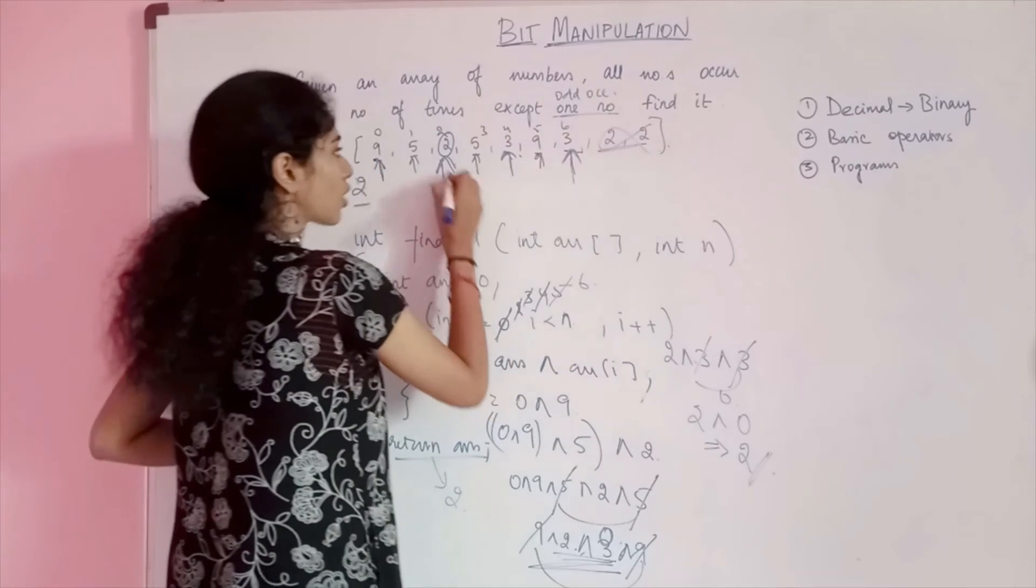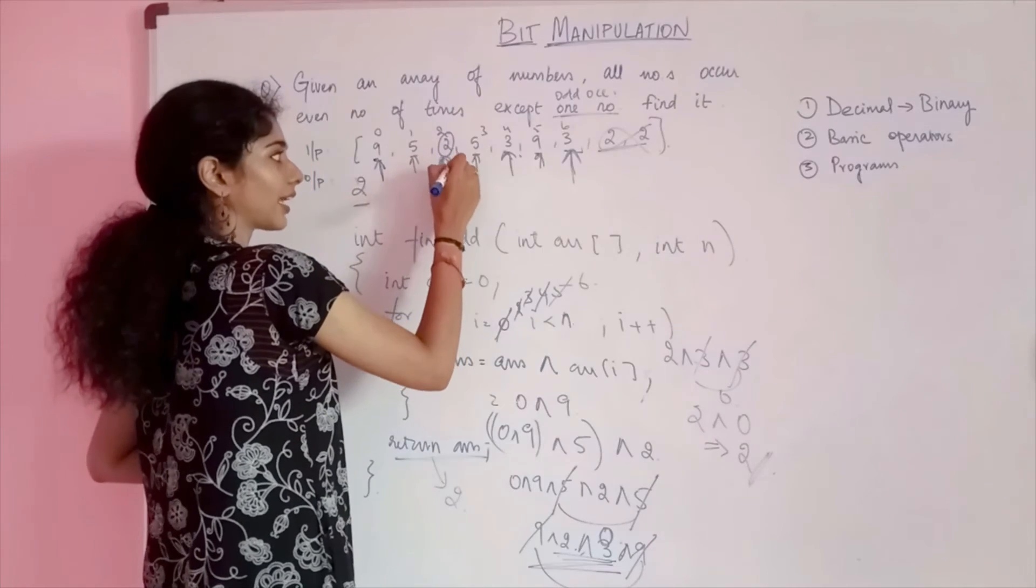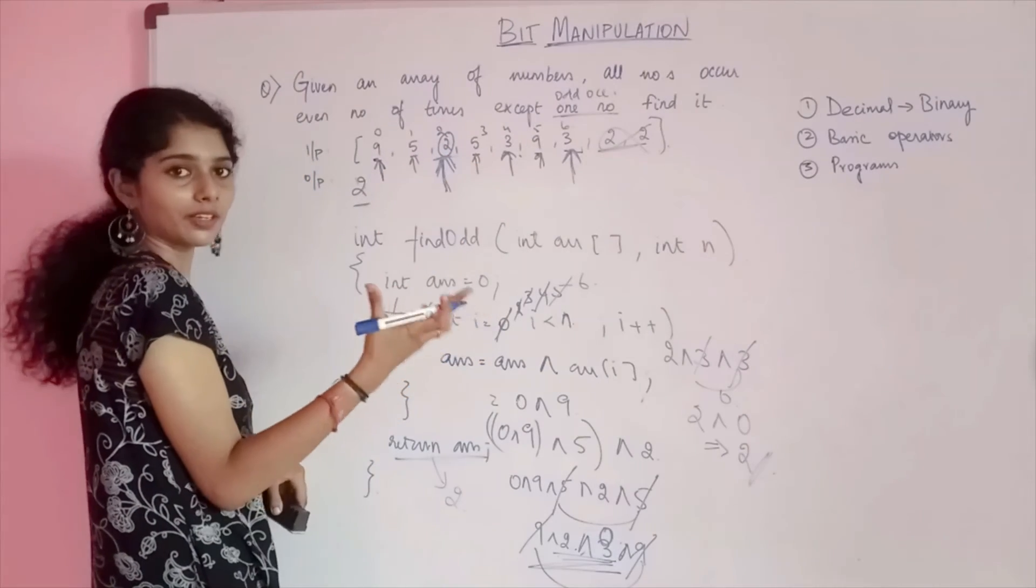Even if you have 2, 2, 2, this answer will hold true. Occurring only one number or odd occurring number can also be answered, because this 2 and this 2 will get cancelled, so obviously only this odd one will remain.